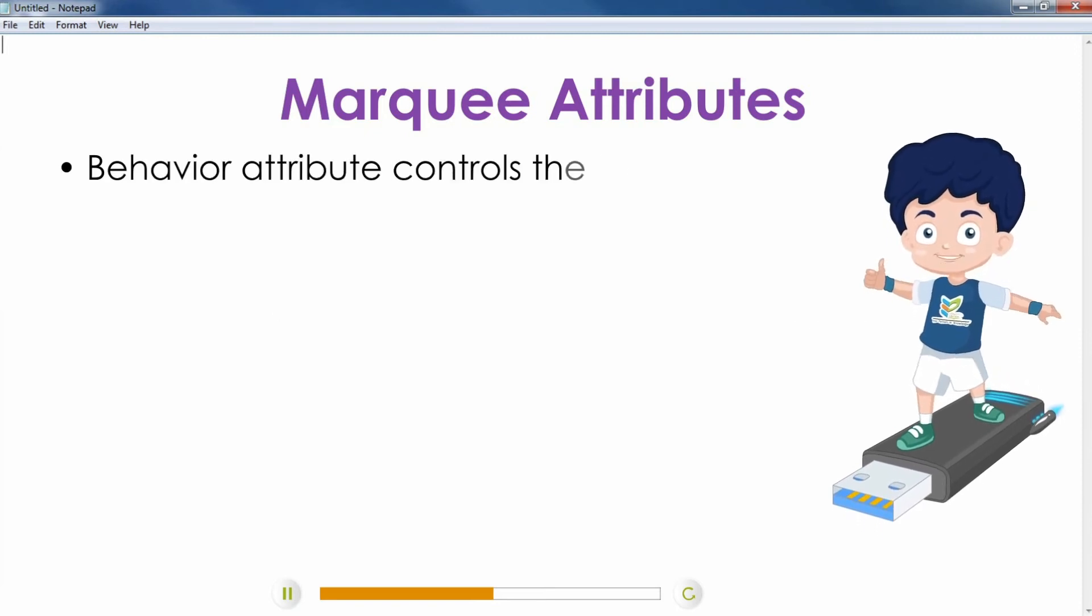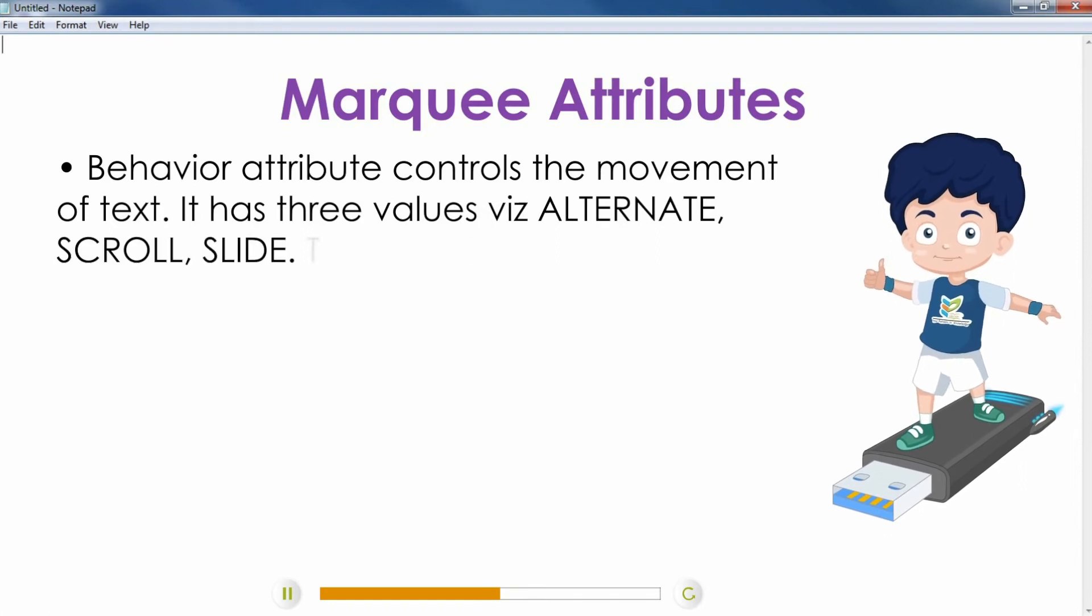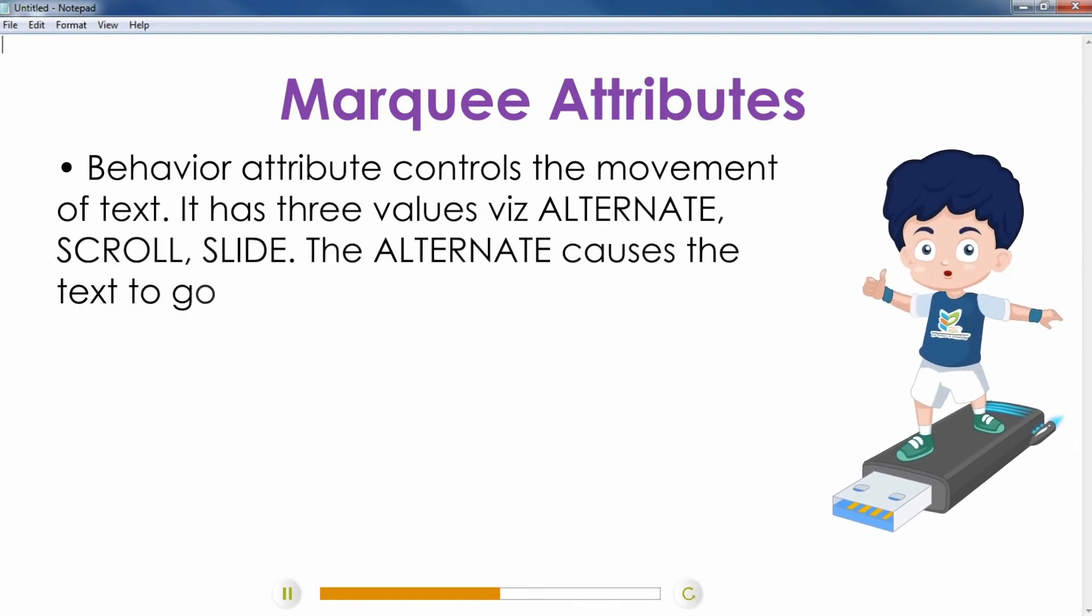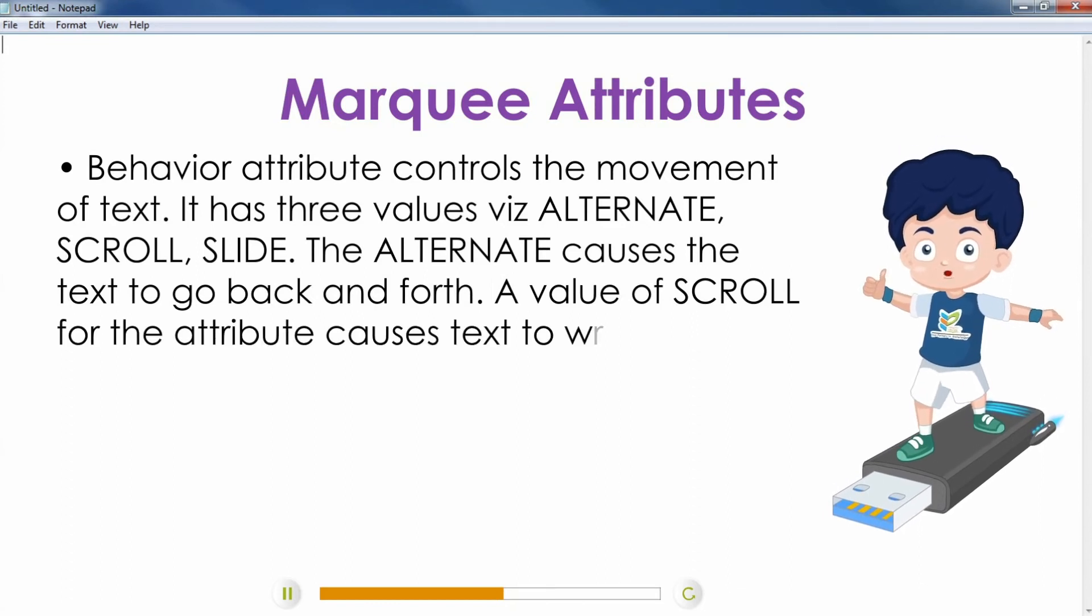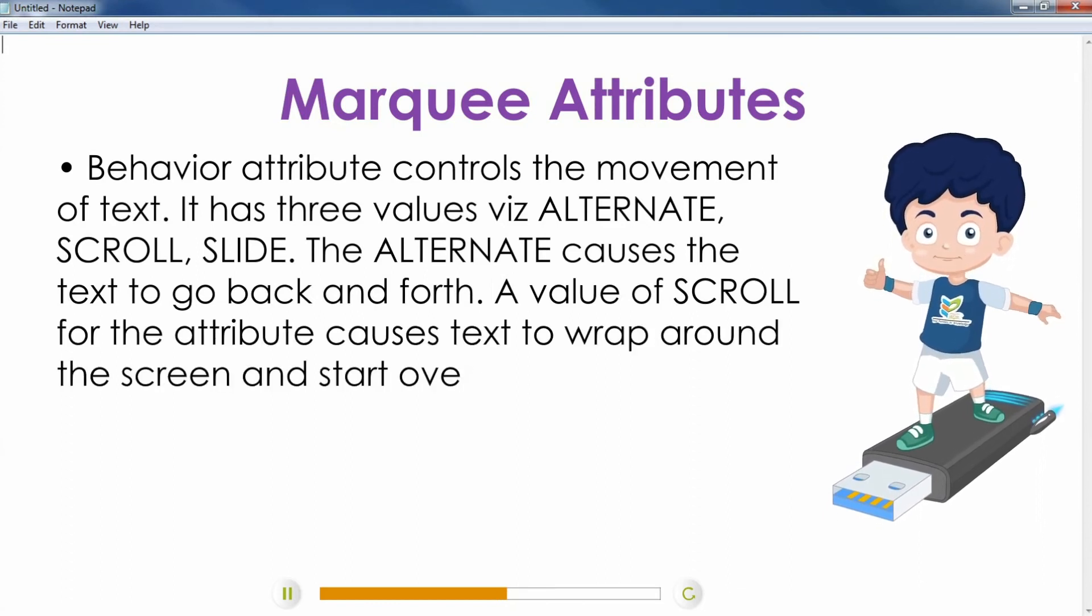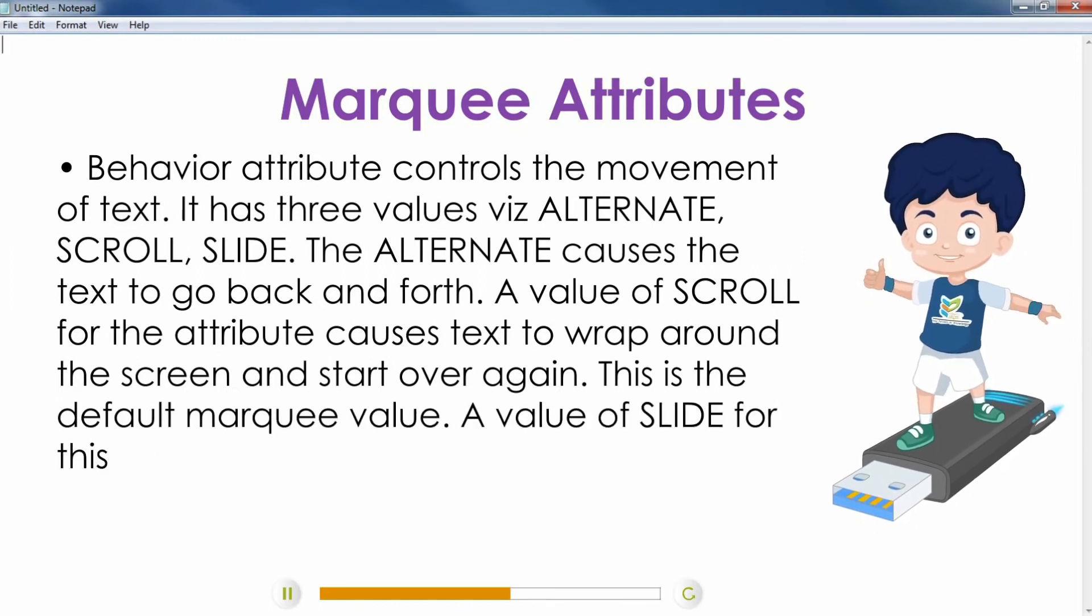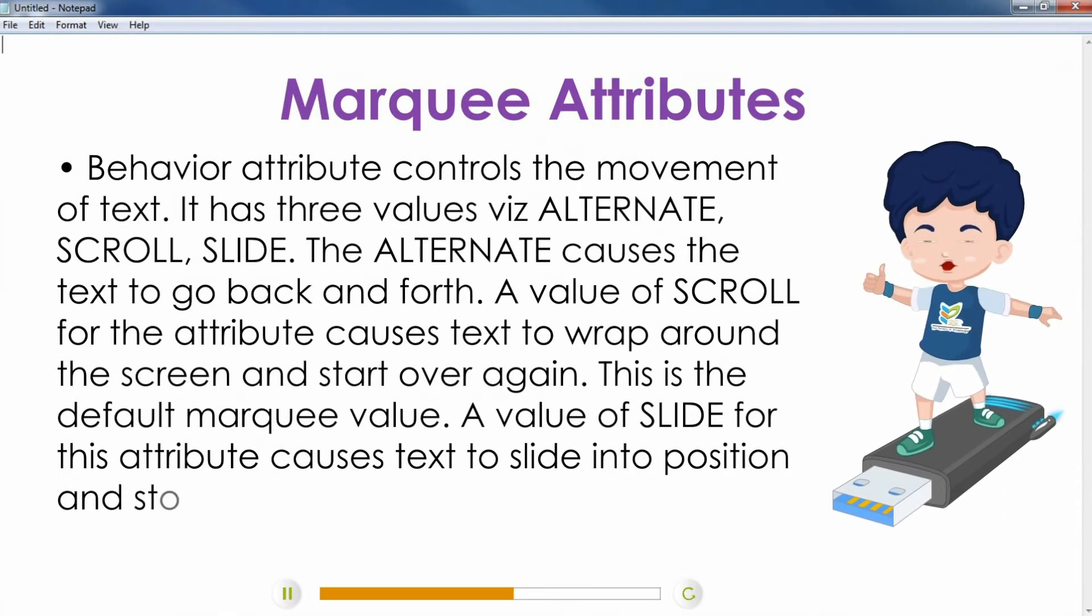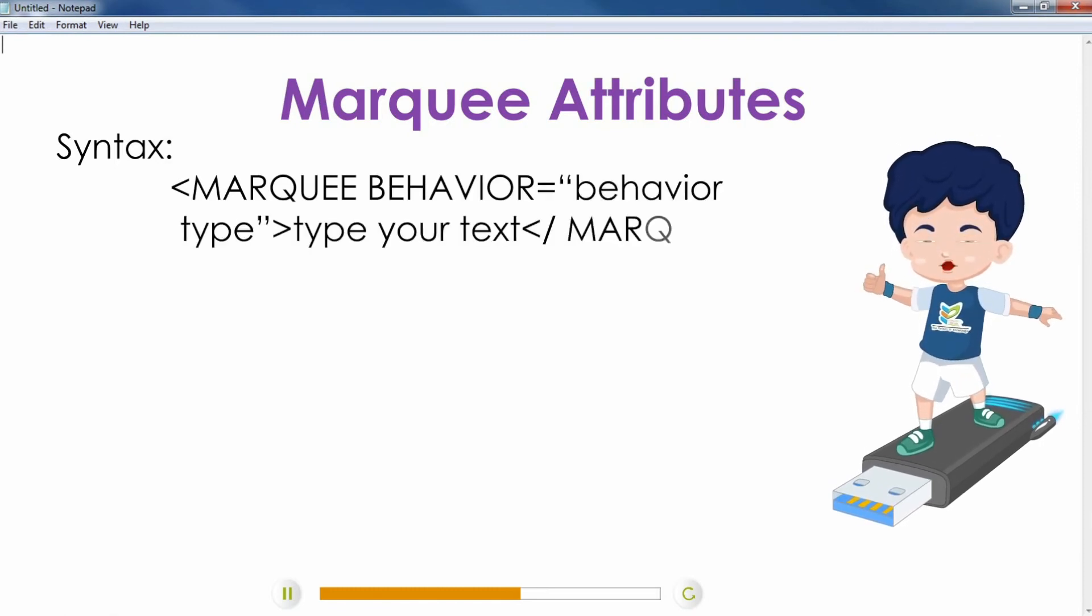Behavior attribute controls the movement of text. It has three values: alternate, scroll, and slide. Alternate causes the text to go back and forth. A value of scroll causes text to wrap around the screen and start over again. This is the default marquee value. A value of slide causes text to slide into position and stop moving. Syntax: Marquee behavior equals behavior type, type your text, slash marquee.